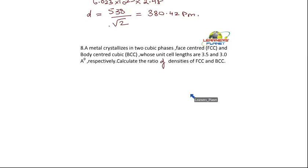So, how will you find out the density ratios? What is the expression for density? The expression for density is rho equals the mass of one atom multiplied by the number of atoms divided by the Avogadro number Na, multiplied by A cube.